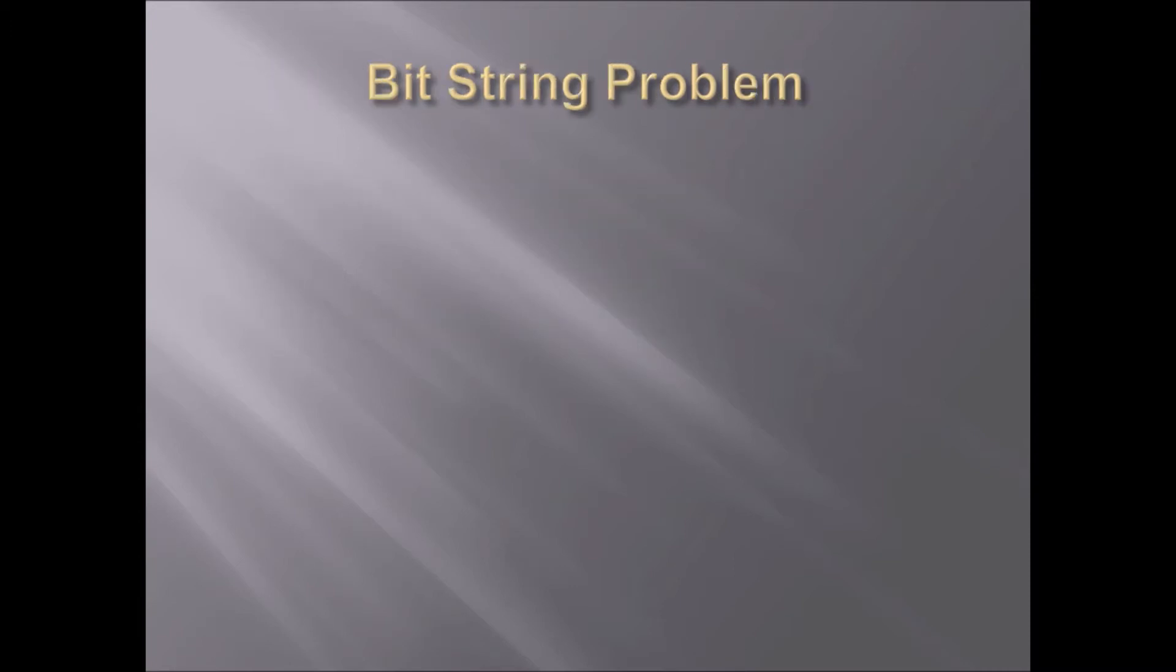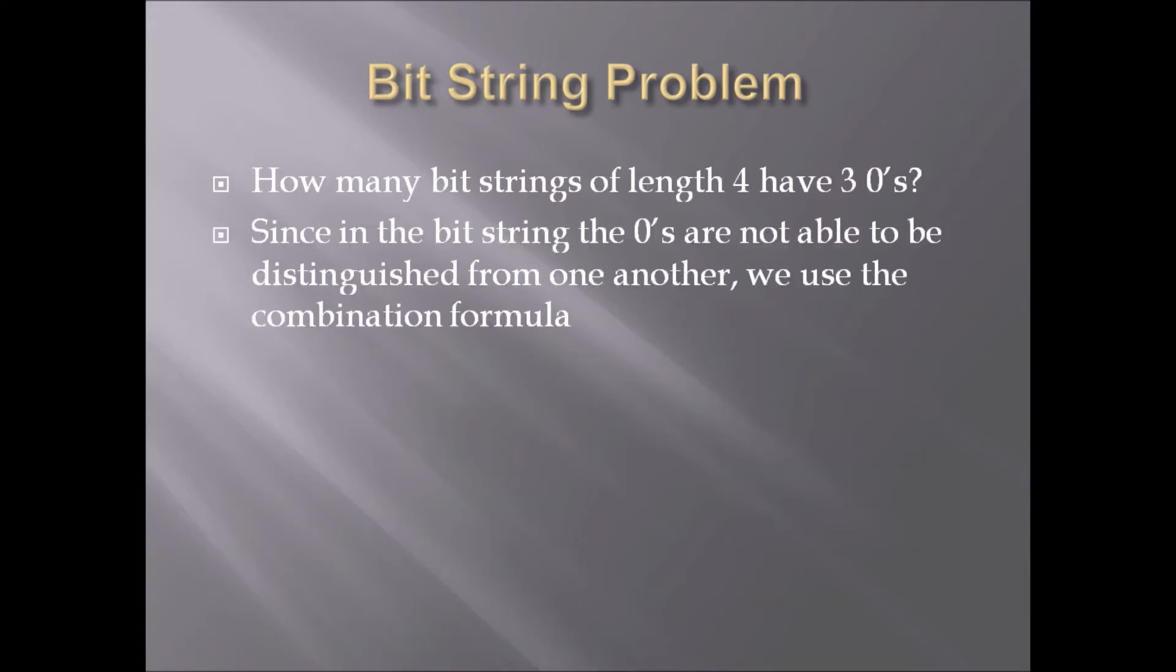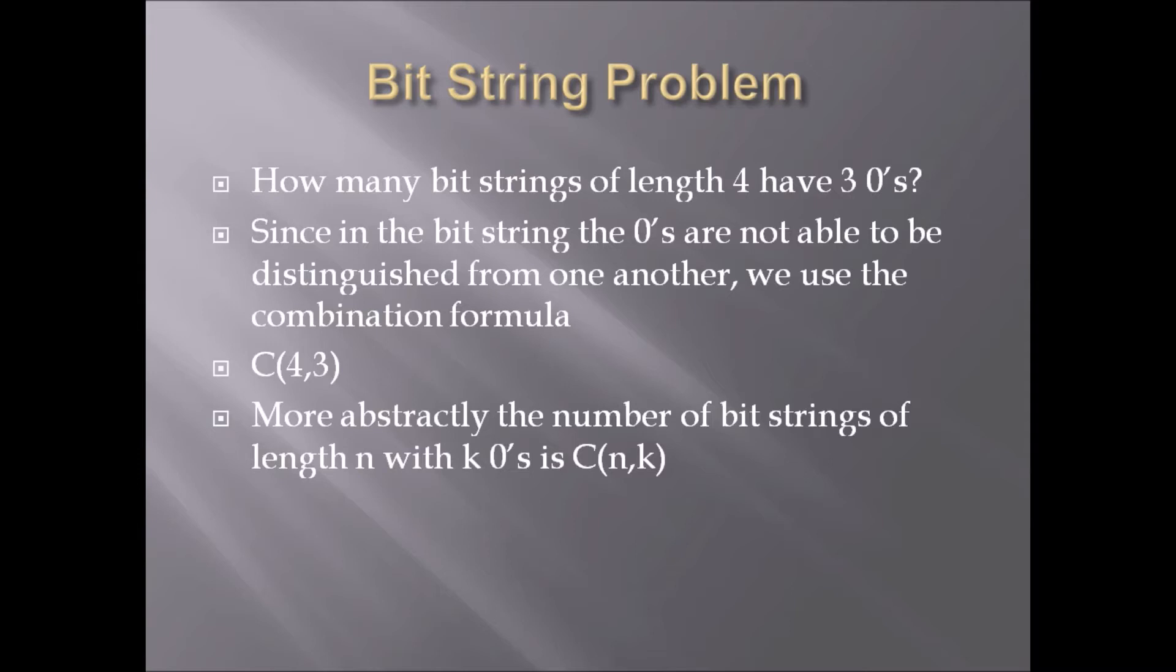Now I want to move to a problem with bitstrings that involves combinations and the choose function. Our problem is: how many bitstrings of length 4 have 3 zeros? Since zeros are not able to be distinguished, we just use the combination formula. So it's 4 choose 3. More abstractly, the number of bitstrings of length n with k zeros is n choose k. We will use this soon.